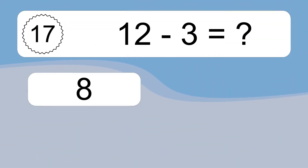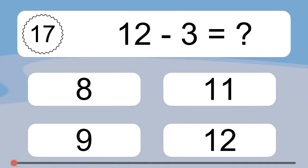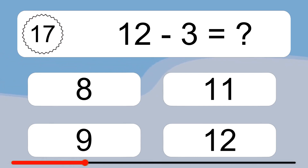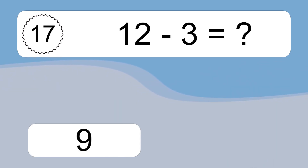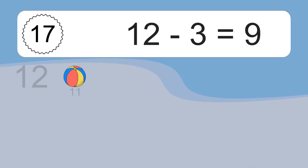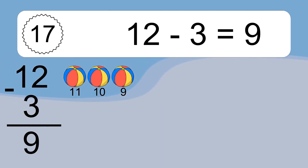12 minus 3 equals what? 12 minus 3 equals 9. Let's count it: 11, 10, 9.